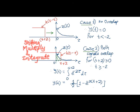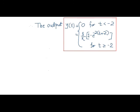And the final output can be expressed as: output is 0 for t less than minus 2 and is the one we calculated for t greater than or equal to minus 2.